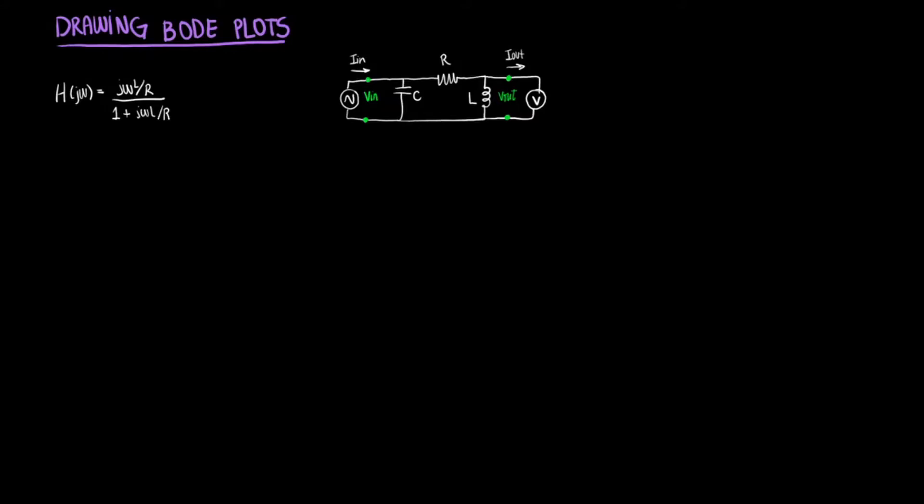Let's start by breaking this transfer function down. We're gonna do that by first finding the poles and the zeros of this function. We can get the zeros from setting the numerator equal to zero and we can get the poles from setting the denominator equal to zero.